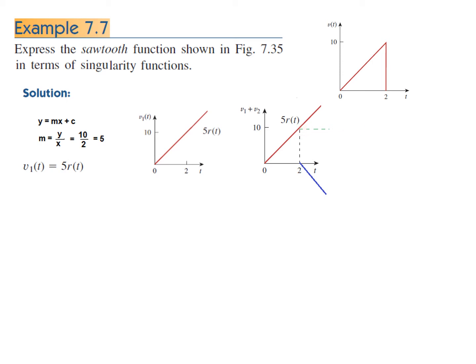For example, from 10 if V1 goes to 11, V2 will contribute -1, so 11 minus 1 stays at 10, remaining on the original line. If V1 goes to 15, V2 contributes -5, so 15 minus 5 is 10 — it remains on the line. V2 is minus 5r(t-2) because it starts at t = 2, so it is a shifted function going in the negative direction.